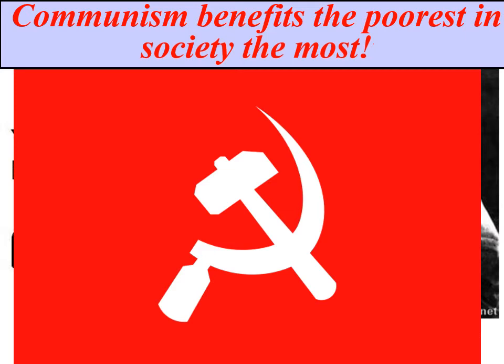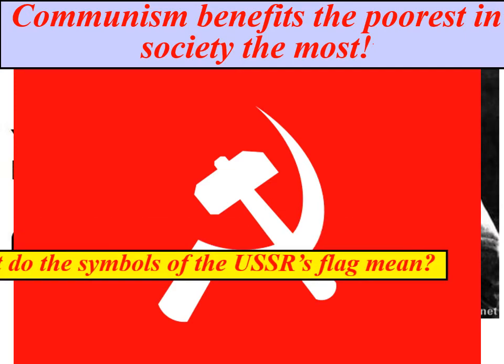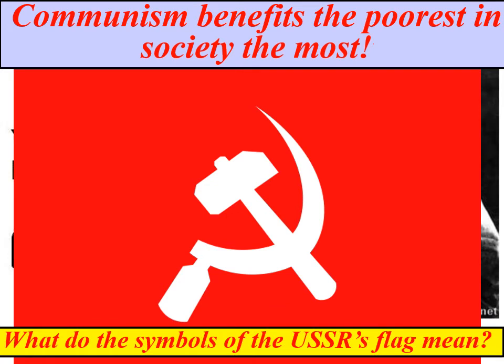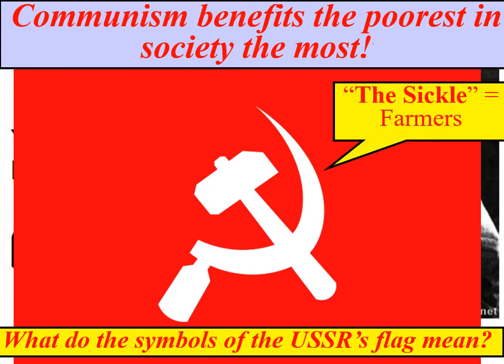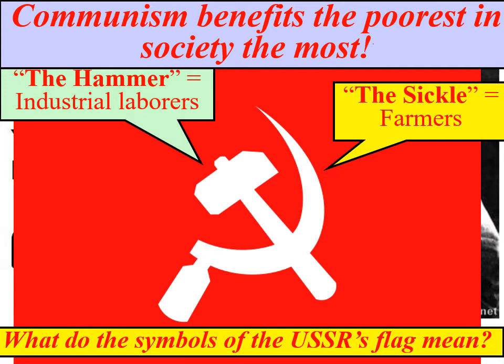You can see these symbols on the Soviet Union's flag — two tools used by different types of laborers. The first is called a sickle, like the Grim Reaper's scythe but a handheld version that farmers use to chop down wheat or crop stocks. The other is a hammer, used by industrial laborers. These represent people usually at the bottom rung of society — the backbone of the country, the laborers in industry and the farmers feeding everyone.